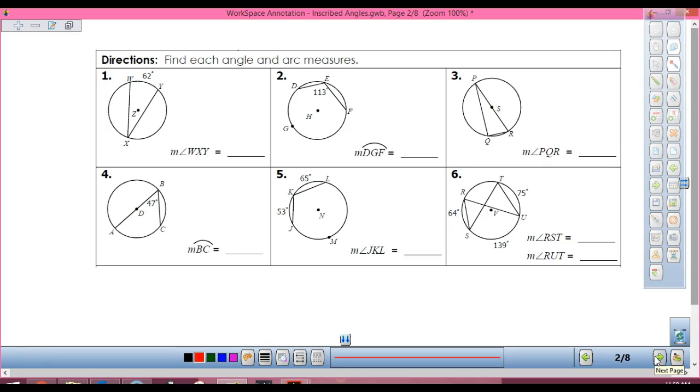So if I'm going arc to angle, I do what? Divide by 2, yep. So if I'm going arc to angle, I'm going to divide by 2. So WXY is going to be 31. Number 2, if I'm going angle to arc, what do I do? You've got to multiply by 2. So at number 2, I'm going angle to arc. So my arc is 226.